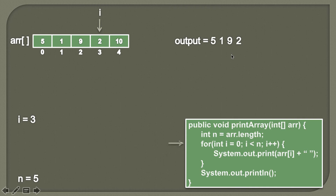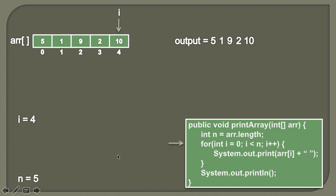Moving ahead, we'll again increment the value of i by one, so i becomes four. And it will point to the fourth index now. We know that four is less than five, therefore the condition in the for loop comes out to be true, and then we'll print the value. So i will become five. Here we can see that five is not less than five, therefore the condition in the for loop comes out to be false. As we have iterated each and every element and printed it on the console, we'll simply exit this for loop.